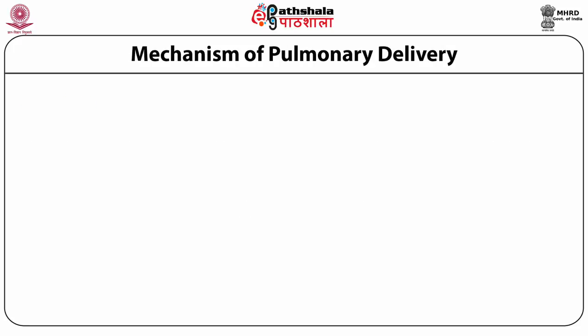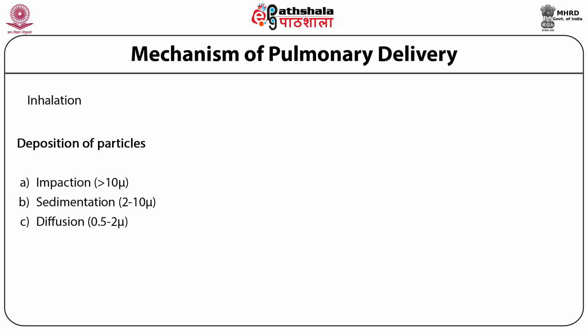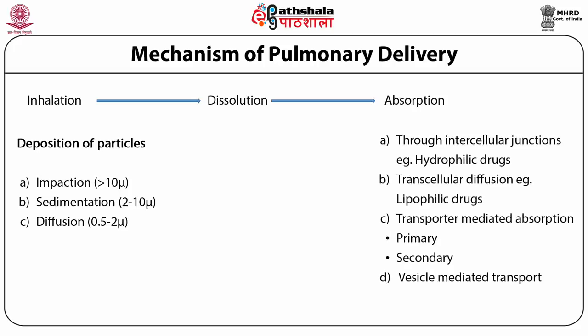Looking at an overview of pulmonary absorption: once particles are inhaled, they get deposited by inertial impaction if particle size is less than 10 micrometers, by sedimentation if between 2 to 10 micrometers, or by diffusion if between 0.5 to 2 micrometers. After deposition on the mucous membrane, they undergo dissolution, and depending on solubility, they get absorbed. There are four mechanisms of absorption depending on physicochemical properties. Hydrophilic particles with molecular weight around 600 to 7500 daltons are absorbed through intercellular tight junctions by paracellular diffusion, whereas lipophilic particles permeate passively through the cell membrane. Larger molecular weight molecules are absorbed by transporter-mediated active transport — transported against the concentration gradient using external energy.